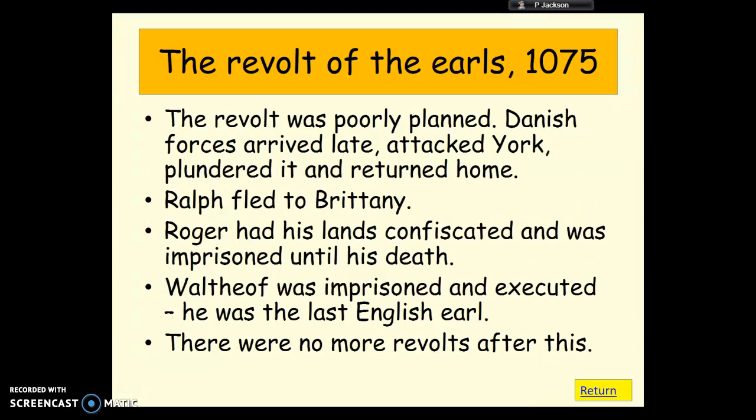The revolt was poorly planned and ended up falling apart. In the end, only Waltheof — being the only English earl involved — was executed. Ralph fled to Brittany, and Roger had his land confiscated and was imprisoned. That was the last revolt that took place in the era of William the Conqueror. He had really established control through a reign of terror, through building castles, but also through a mixture of religion and justifying himself as the rightful king of England — and he managed to gain control of England very successfully.